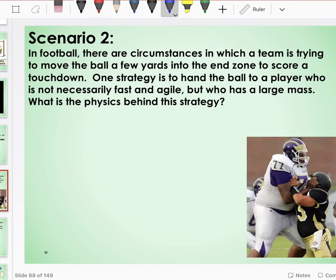Another example here. Newton's laws can be used in sports. So in football, there are some circumstances in which a team is trying to move the ball only a few yards into the end zone to score a touchdown. One strategy is to hand the ball to a player who is not necessarily fast and agile, but who has a large mass. So maybe you've seen this, I'm not a huge football expert, but I've seen this where right at the end where they're trying to score a touchdown, they won't give the ball to their typical skinny runners. They'll pass the ball to their big guys and they just try and jump over the end line.